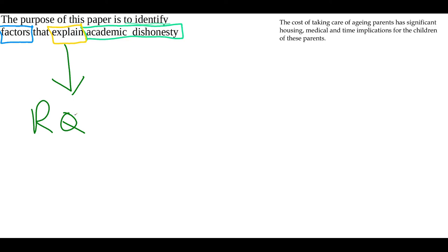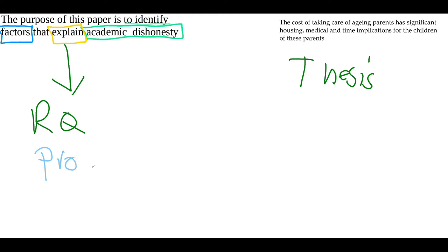Over here to the right, I have a thesis statement, and I want to tell you some of the differences between a thesis statement and a purpose statement, because they're very, very similar in how they're constructed and set up. When you are doing a purpose statement, you are laying out a promise for the reader — that is what a purpose statement does. When you are writing a thesis statement, you are often taking a position on something.